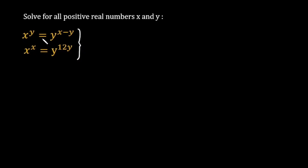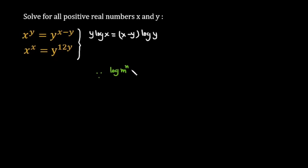I am going to take log base 10 on both sides. So the first equation becomes y log x equal to x minus y times log y, because we know the power property of the logarithm: log m raised to the power n is equal to n log m. So this power comes to the front. Similarly for the second equation: x log x equal to 12 y log y.